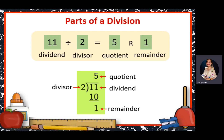So the parts of division — let's have a short review. We have here the dividend. 11 divided by 2 is equal to 5 remainder 1. If we write it using the long division or in our division house — so they call it division house here — 11 goes inside and 2 on the side, and the answer or the quotient is on top. So here we have the dividend, divisor, quotient, and the remainder. For some numbers there is no remainder; for some it has an extra number and we call it the remainder.